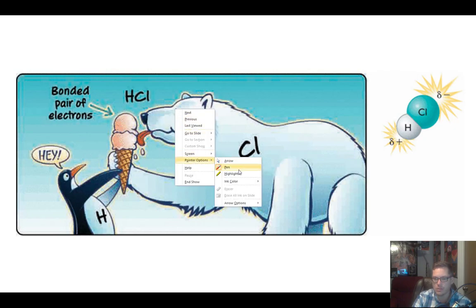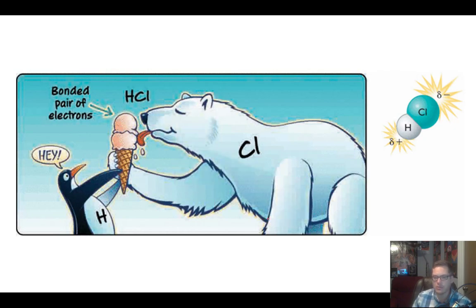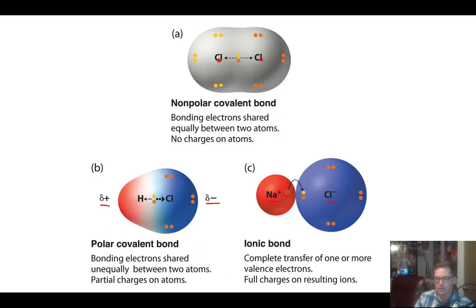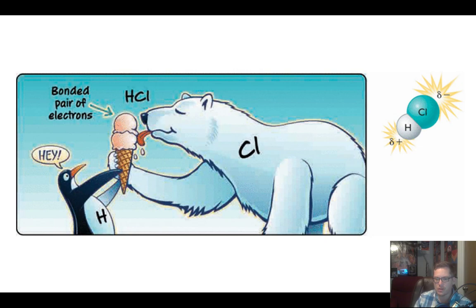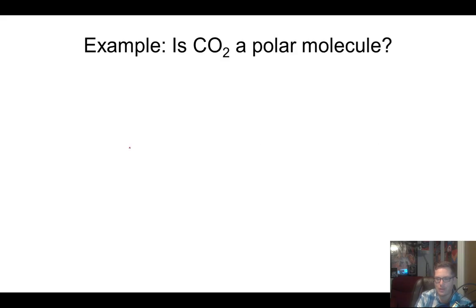So remember, a couple slides ago we looked at hydrochloric acid, HCl, and saw it was polar because hydrogen is much less electronegative than chlorine. Here's another way of visualizing it: the ice cream scoops are electrons, the polar bear is chlorine, and the penguin is hydrogen. The polar bear pulls on the ice cream scoops a lot harder than the penguin because he's much stronger, so you can visualize that the chlorine is stealing the electrons — even though they're sharing, chlorine certainly has a lot more of them than hydrogen.